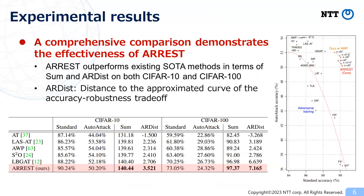In evaluation experiments, a comprehensive comparison demonstrates the effectiveness of ARREST. ARREST outperforms existing state-of-the-art methods in terms of SUB and ARDIST on both CIFAR-10 and CIFAR-100 datasets. ARDIST is a newly proposed measure that calculates the distance to the approximate curve of the accuracy-robustness trade-off, shown as the red dashed line in the right figure.